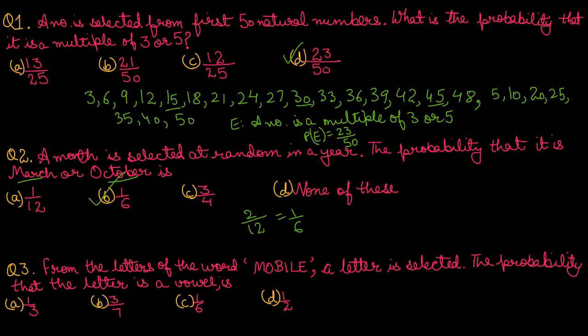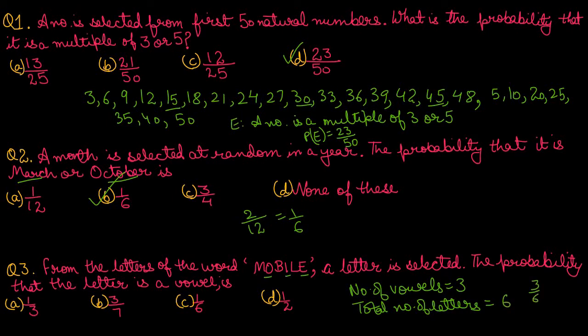Question number 3: From the letters of the word MOBILE, a letter is selected. The probability that the letter is a vowel. We check the vowels in MOBILE — there are 3 vowels. Total number of letters is 6. So probability is 3 upon 6, which simplifies to 1 upon 2. Option number D is the correct one.